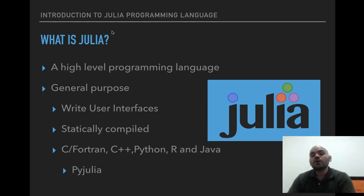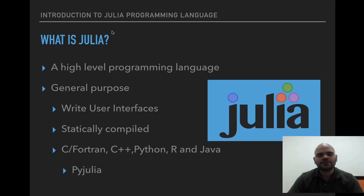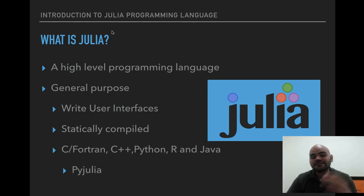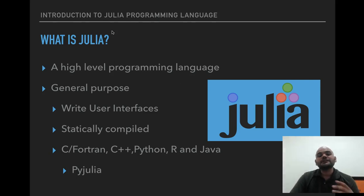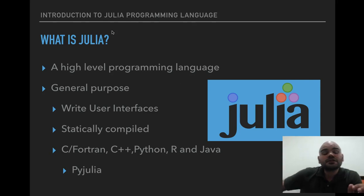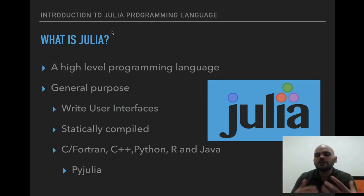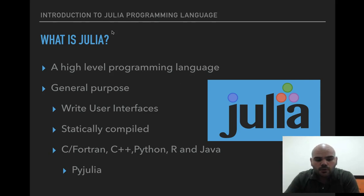You can use Julia with other programming languages using things known as interfaces, to communicate with languages like C, Fortran, C++, Python, R, and Java. To communicate with Python, you can use something called PyJulia, and I'm going to put the link in the description below this video so you can take a look at it if you want to use it with Python, which is pretty cool.